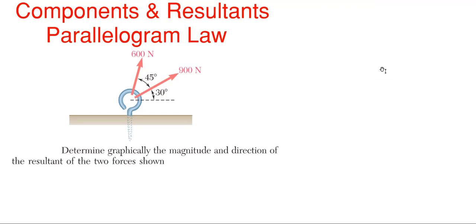What we're going to be looking at today is components and resultants, and we're going to be solving a components and resultants problem using the parallelogram law. We have this hook with 900 Newtons of force and 600 Newtons of force being applied in the orientation of the angle shown, and we need to find the resultant acting from these two forces.